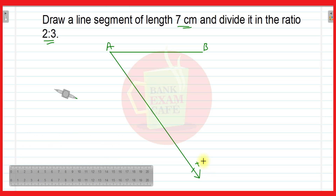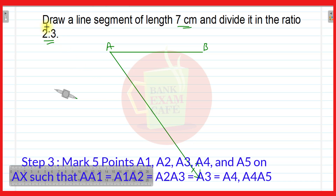Now after that, take 5 points on ray AX. Why 5 points? Because we have to divide it in the ratio of 2 is to 3. Since 2 plus 3 equals 5, we will take 5 points on ray AX such that the distance between each successive point will be the same.